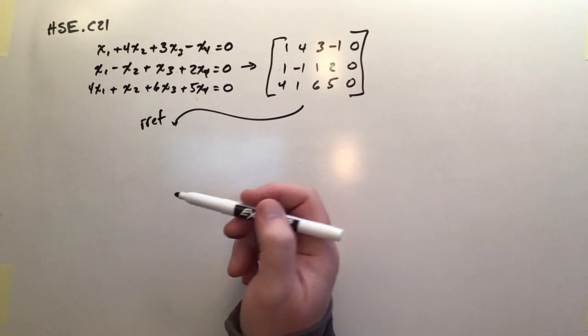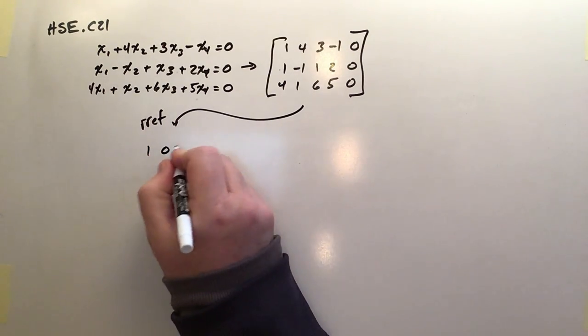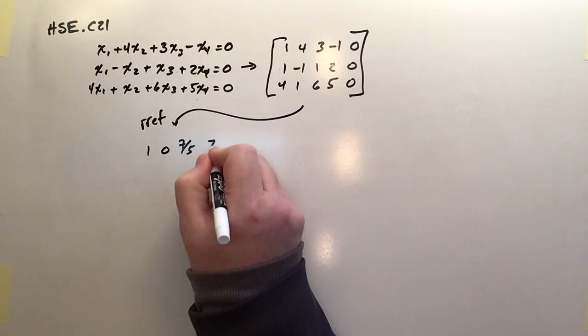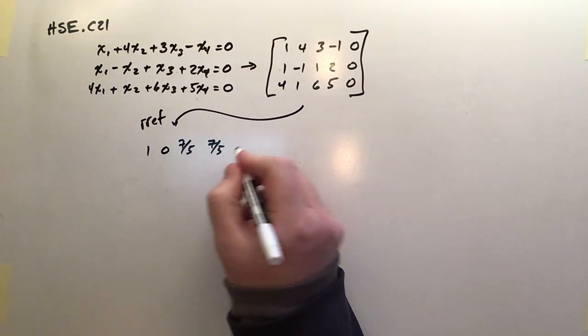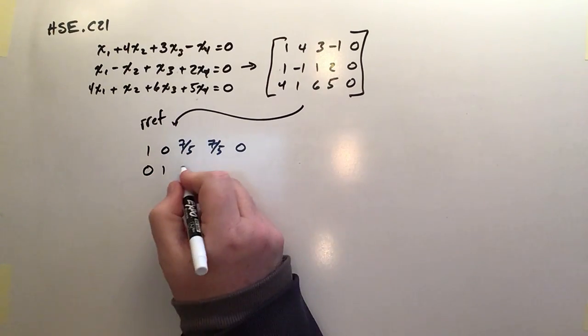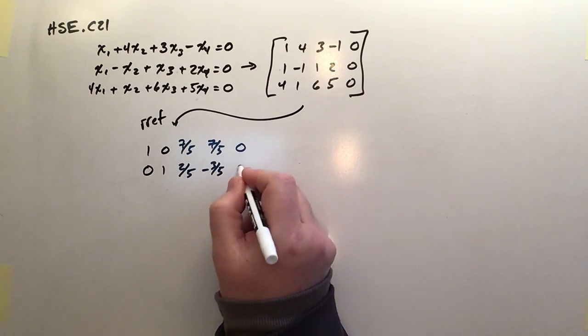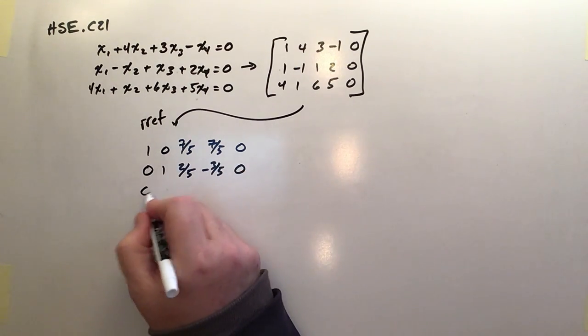Once we put this guy through REF, here's what we get. So one, zero, seven-fifths, seven-fifths, and zero. Zero, one, two-fifths, negative three-fifths, and zero. And then the last line is all zeros.